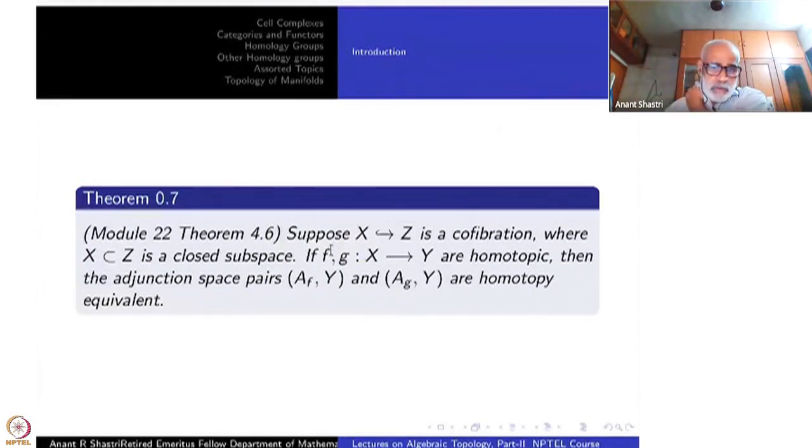Module 22 again, Theorem 4.6: Suppose X → Z is a cofibration where X is a closed subspace. If we have two functions f and g from X to Y which are homotopic, then the adjunction spaces Af∪Y and Ag∪Y as topological pairs are homotopy equivalent. This tells you that if you have a cofibration and you perform adjunction space constructions, then the adjunction spaces Af and Ag are homotopy equivalent, provided f and g are homotopic to each other.